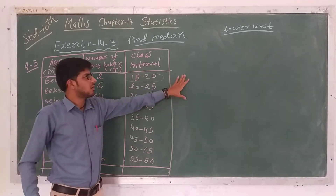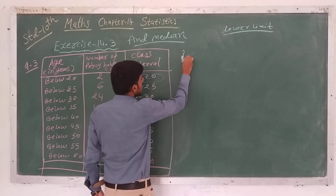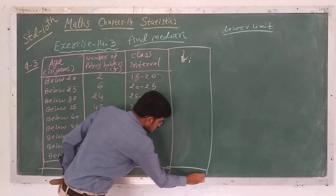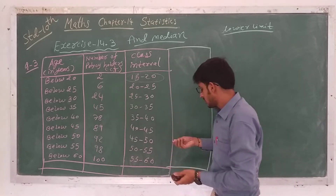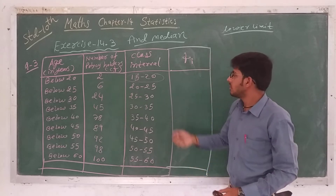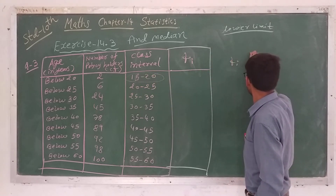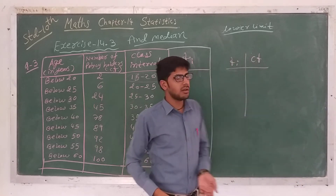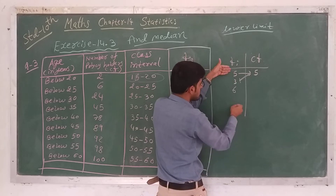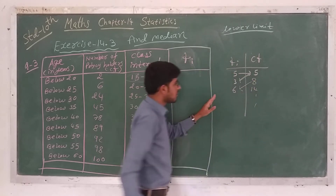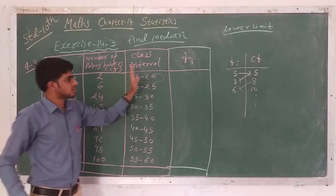The numbers of policy holders given are cumulative frequencies, not frequencies. So we have to find the actual frequency from the cumulative frequency. To go from frequency to cumulative frequency you add successive values, but here we have the reverse — we have to subtract. For example, if cumulative frequencies are 5, 8, 14, then the frequencies are 5, 8 minus 5 equals 3, 14 minus 8 equals 6.